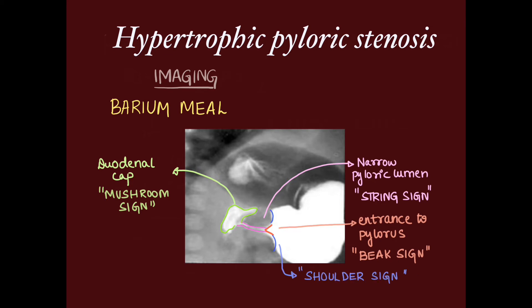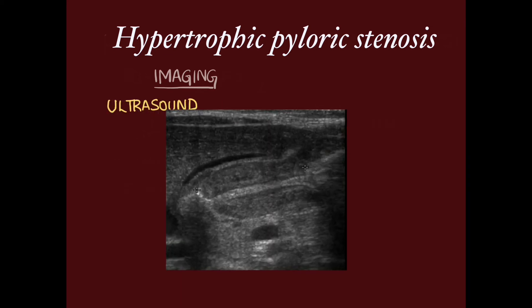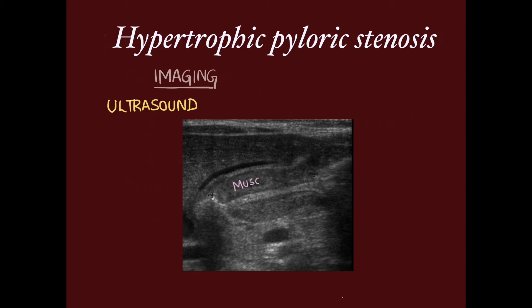There will also be shouldering in the pyloric region. On ultrasound imaging, we can see the hypertrophied muscle, which appears hypoechoic, and the mucosa, which appears hyperechoic.